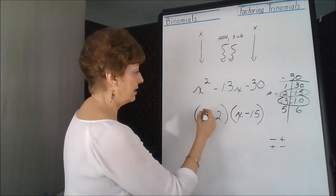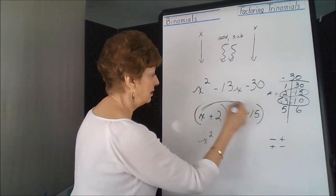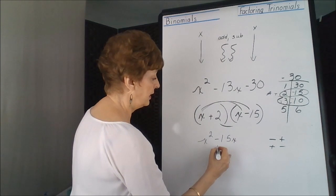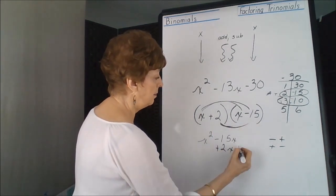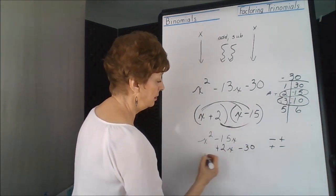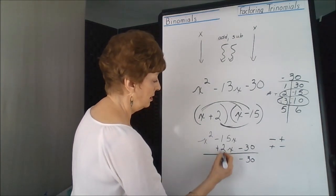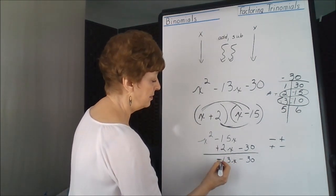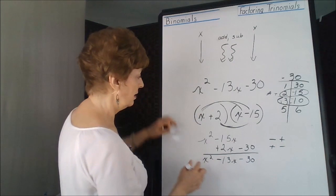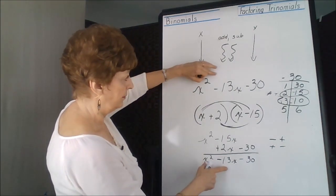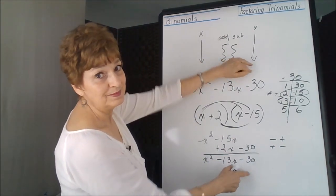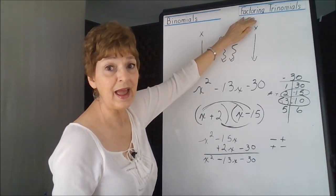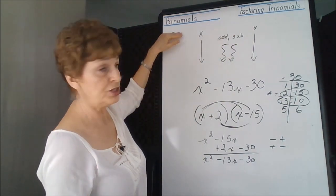Let's check this. x squared minus 15x plus 2x minus 30. Minus 30. Subtract, we get a 13x. The larger numeral is negative. And x squared. x squared. This is taking a trinomial and factoring it into two binomials.